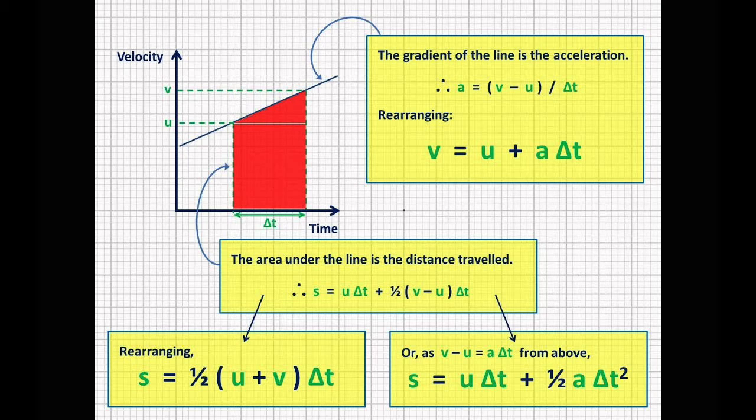So the rise is v minus u, and then the delta t, or the change in time, is the run. So v minus u over delta t is the slope, which is the acceleration. So if you rearrange the equation, you get v equals u plus at.